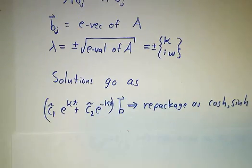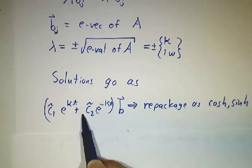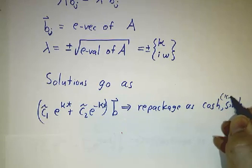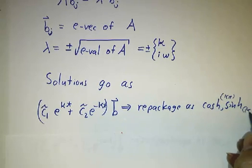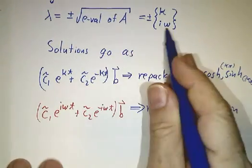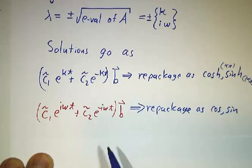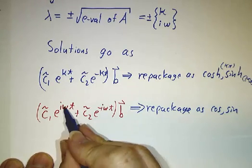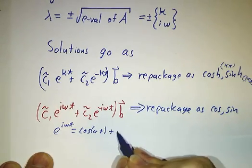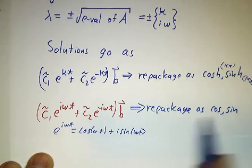So for the positive eigenvalues, you get e to the kappa t and e to the minus kappa t, and we repackage them as coshes and sinhs. cosh of kappa t and sinh of kappa t. When the eigenvalues of A were negative, the square roots of that were imaginary, so we had e to the i omega t and e to the minus i omega t. And you know that e to the i omega t is the cos of omega t plus i times the sin of omega t. So we repackage that into sines and cosines of omega t.